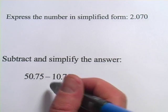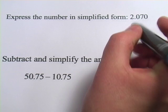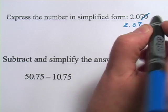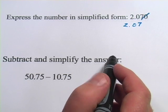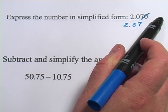Let's look at another example. Express the number in simplified form, we have 2.070. Well, you can drop that last zero. It's the same thing. 2.07 is the same thing as 2.070. So the zero on that end, as long as there's no other numbers after it, can be dropped as well.